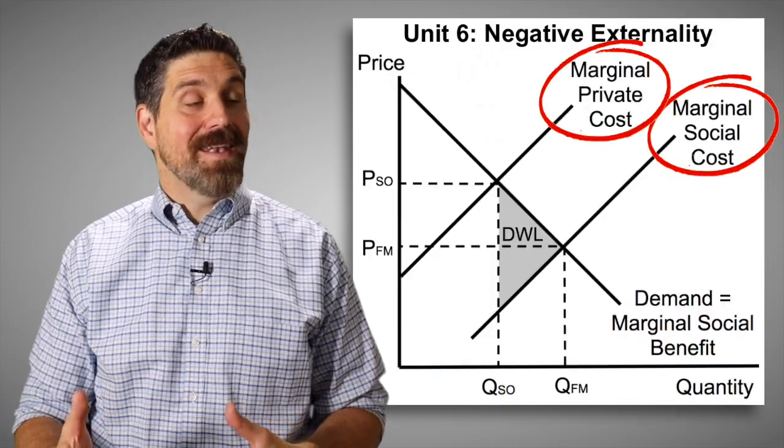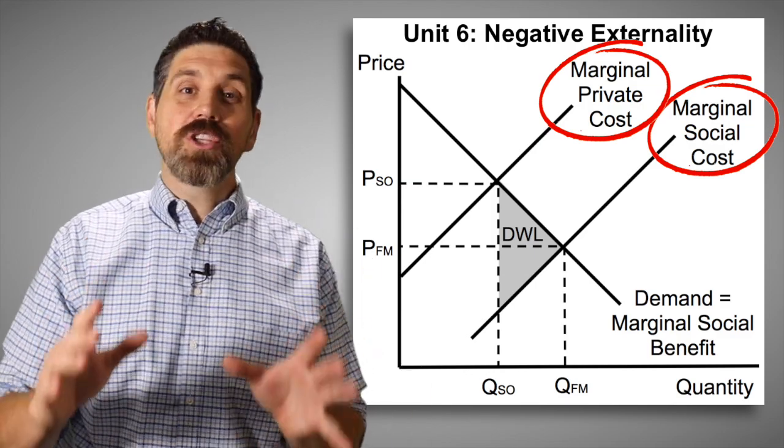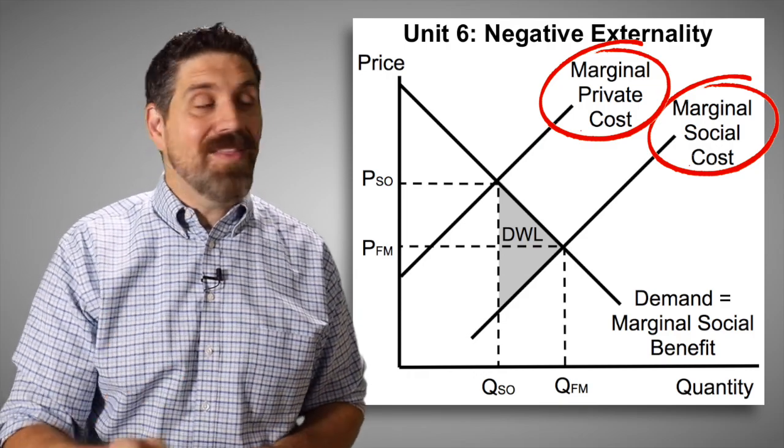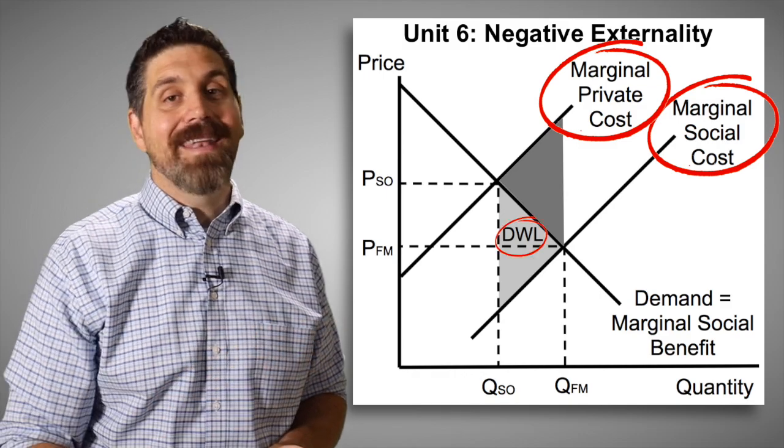Now, finally, here in Unit 6, when you have to draw negative externality, this graph has three mistakes. The marginal social cost should be above the marginal private cost. So each one of these are mislabeled. And the deadweight loss is also in the wrong spot. It should be up here, not down here.